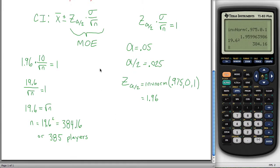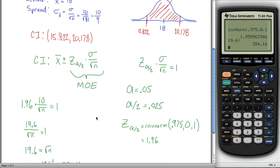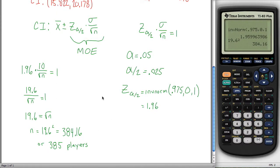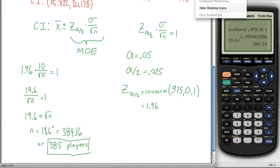So if I wanted my margin of error to only be one inch, instead of looking at 81 players like I did, I'd have to look at 385 players. So this right here is my final answer, and that is the end of this problem.